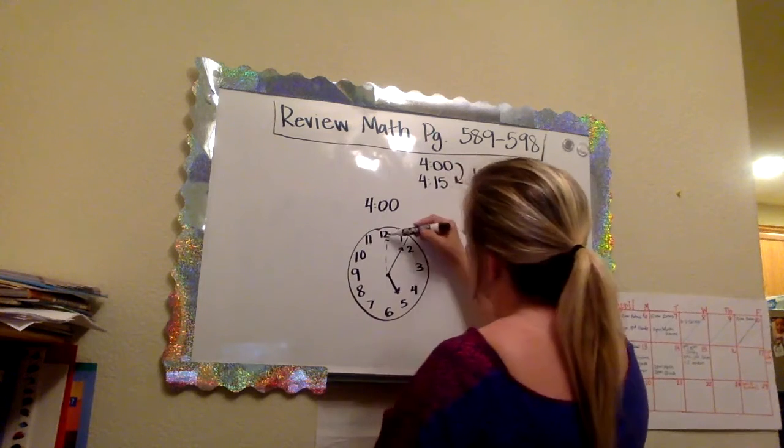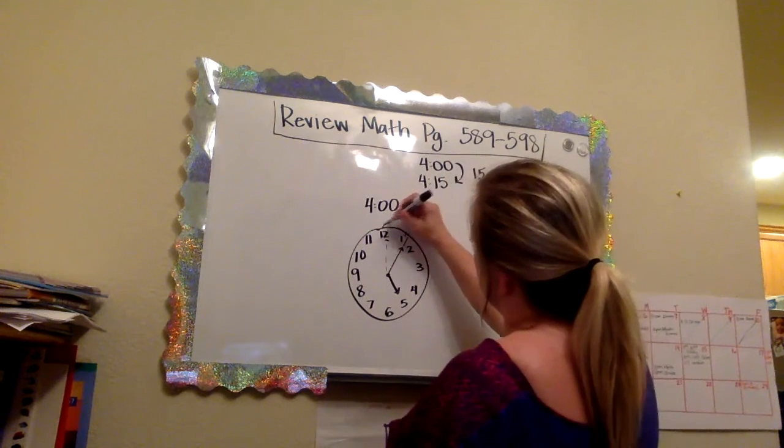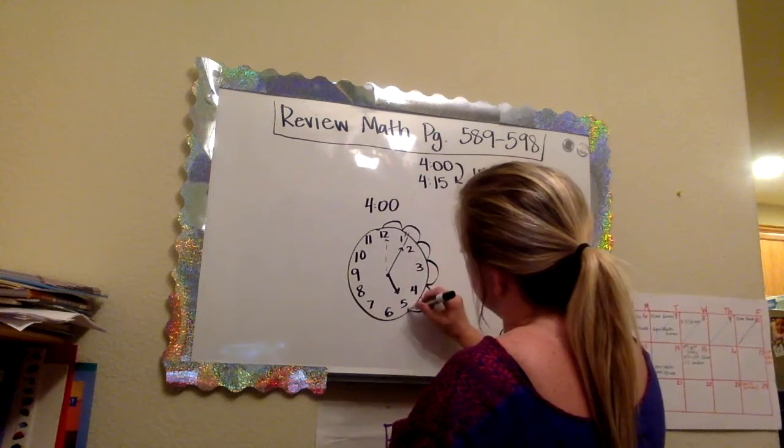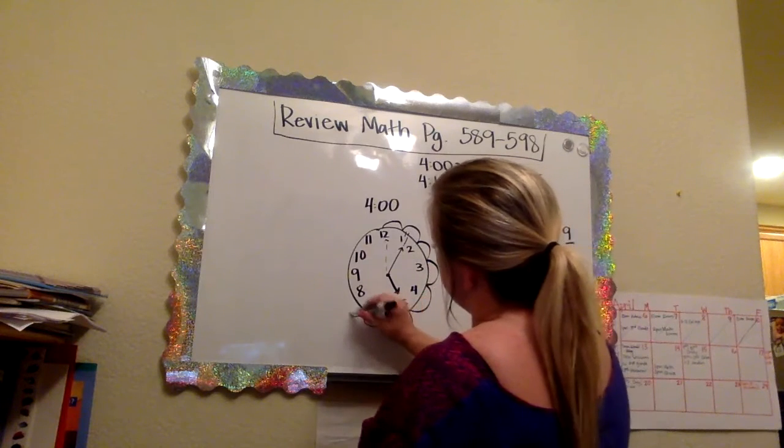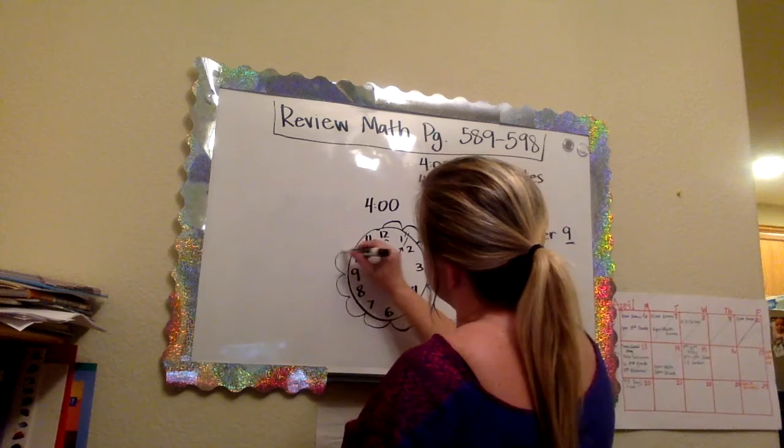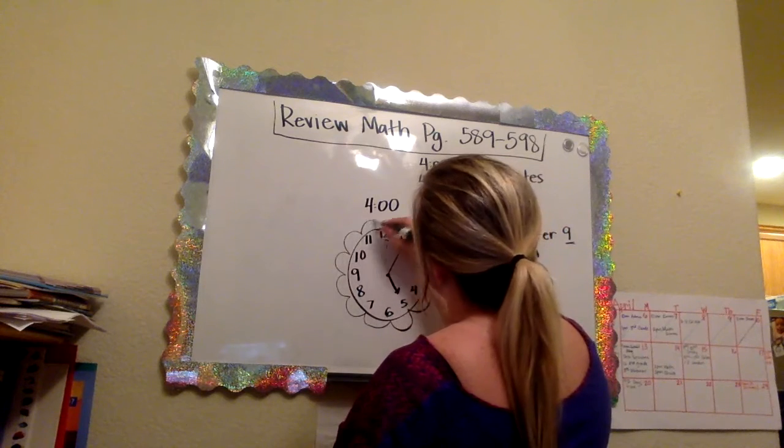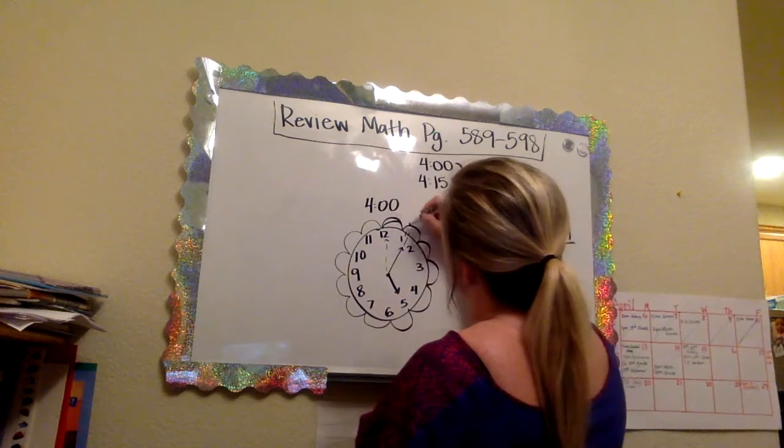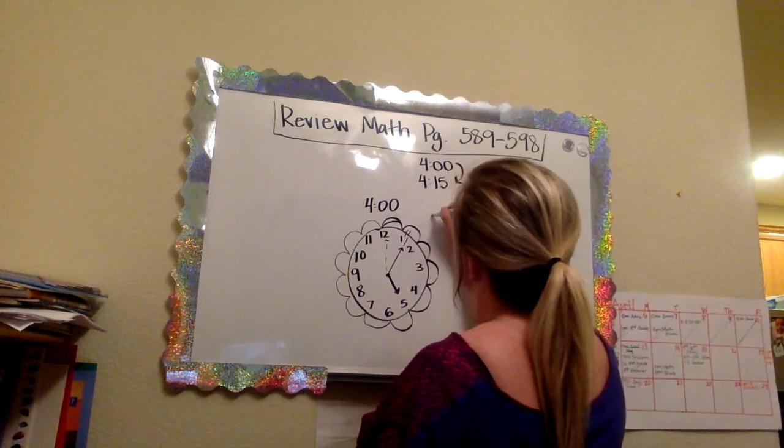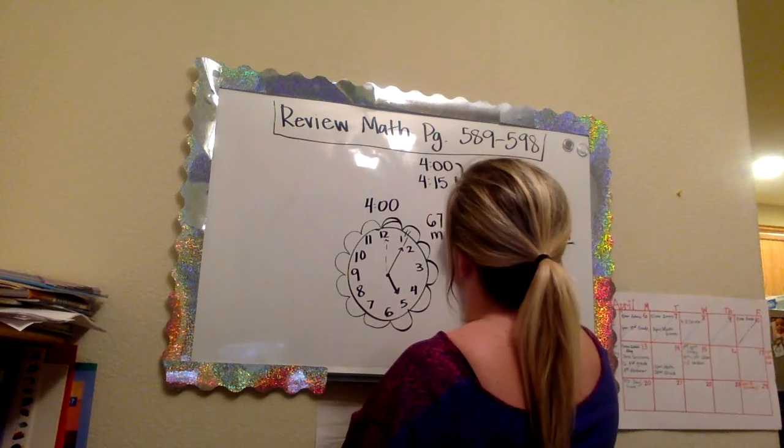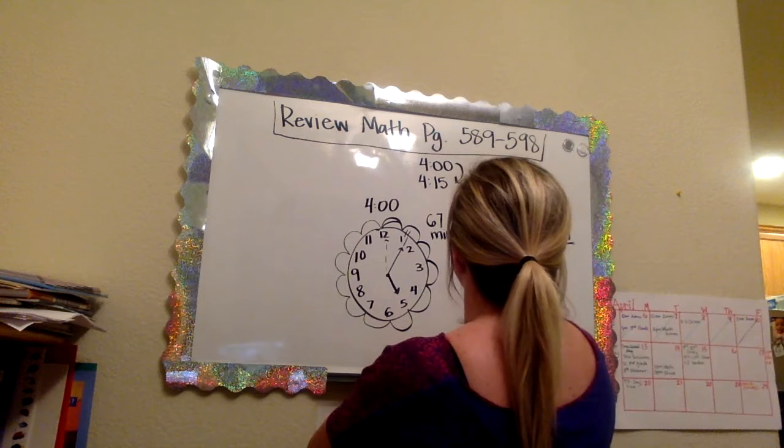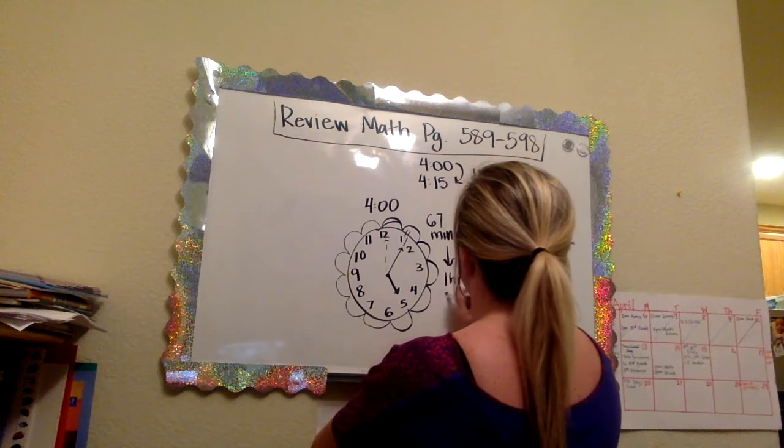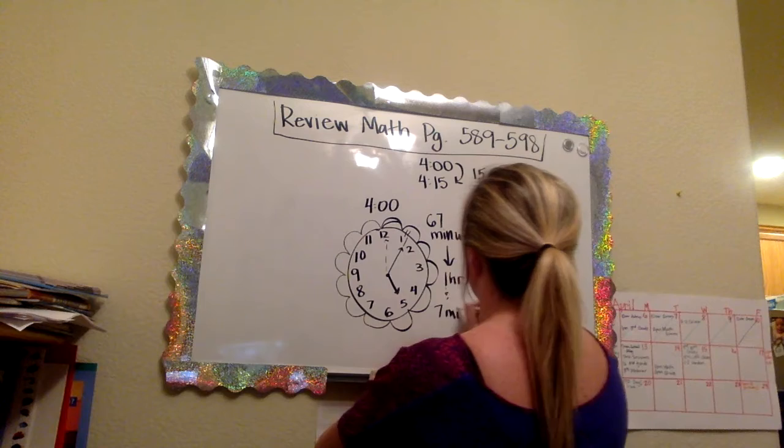And we're going to count by fives. So we're going to count 5, 10, 15, 20, 25, 30, 35, 40, 45, 50, 55, 60, 65, 67. 67 minutes, which equals one hour and seven minutes.